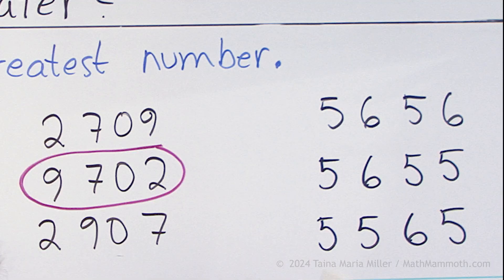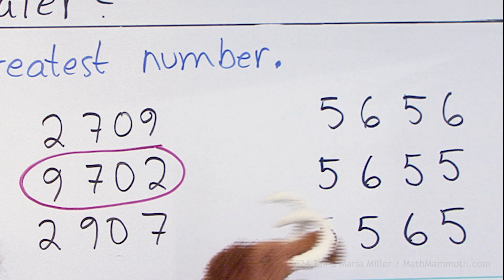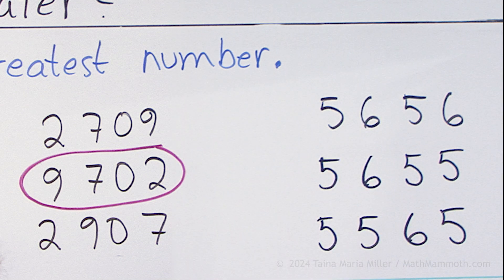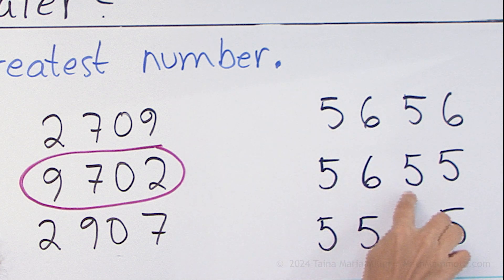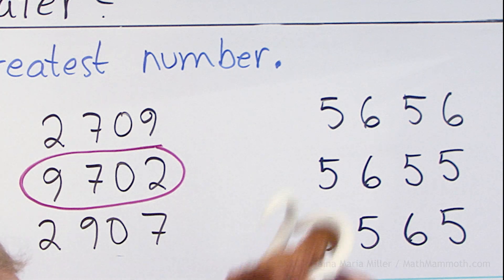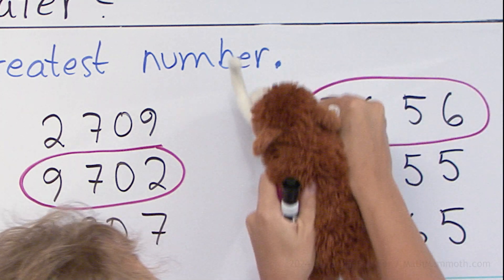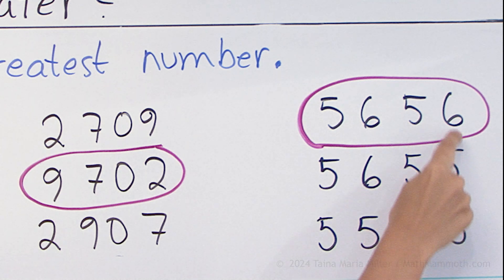Now it's fives and sixes. Five thousand — we cannot make the difference with the thousands. How about the hundreds? That's five, six, and six. It's one of these two numbers. Then the tens are the same. That's the biggest number, and this time the difference was here in the ones.